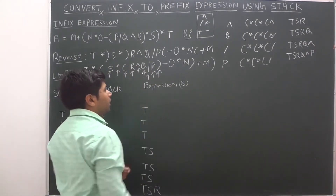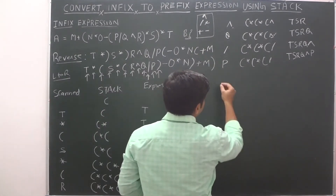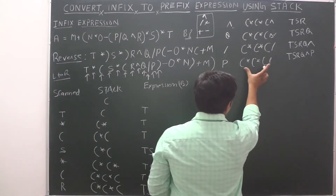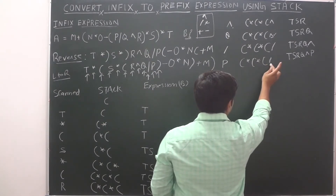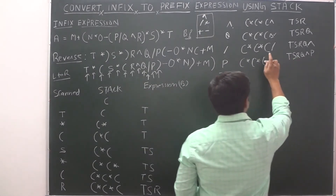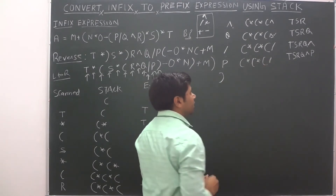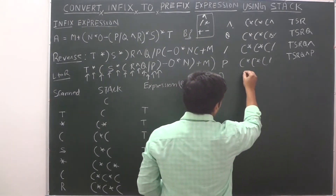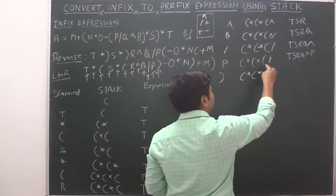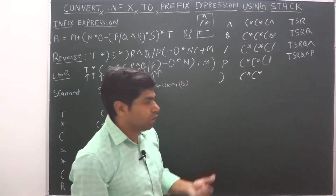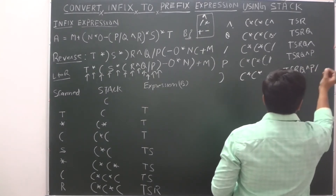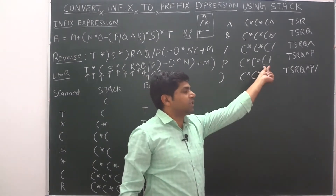Next is a closing bracket or right parenthesis. If a right parenthesis is encountered, we repeatedly pop operators from the stack and add them to the expression until a left parenthesis is encountered. The left parenthesis is then removed from the stack. So here, division gets added to the expression, and the left parenthesis is removed. Expression is now T, S, R, Q, exponential, P, division.